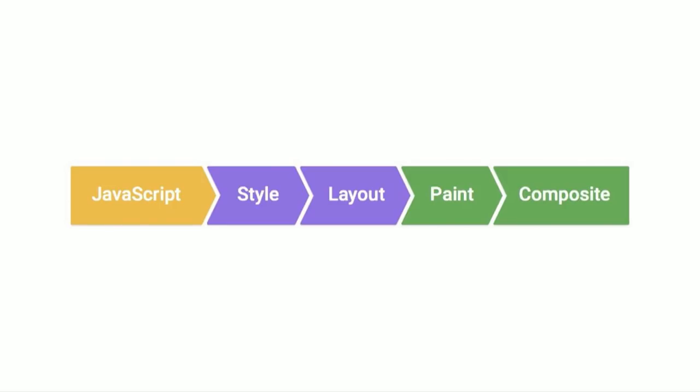Any time the browser loads up the CSS, it's going to create a map saying: I can apply these properties to these elements. The interesting thing is that if you've set a width to 50% on a particular element, the browser at this point doesn't actually know what the computed width is going to be. It's not going to know that until it hits the layout step.